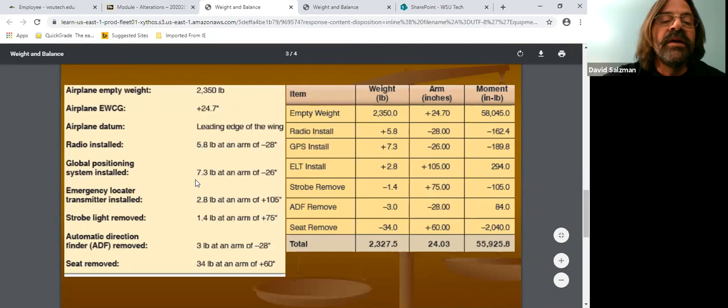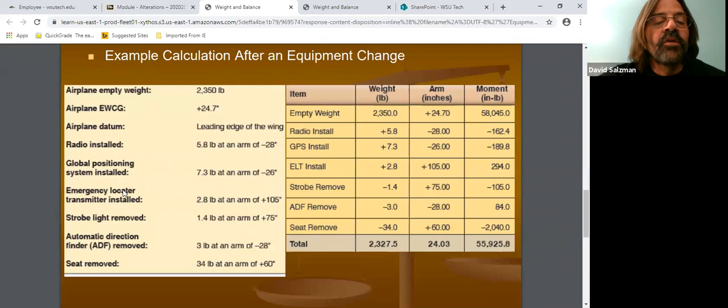It is 7.3 pounds, and it's at a negative 26 station number. So since we're installing it, it is a positive 7.3, and located at a negative 26. Multiply that across. That will give us a negative 189.8. So the next one will be an emergency locator transmitter installed. It's 2.8 pounds. Since we're installing it, it's a positive. And it's located at a positive 105. So we write those numbers in. So then a positive 2.8 times a positive 105 will give us 294.